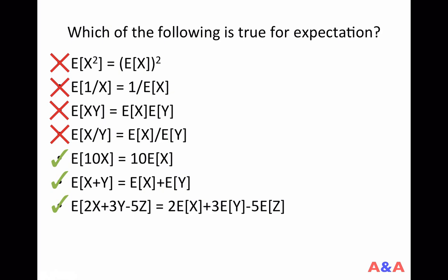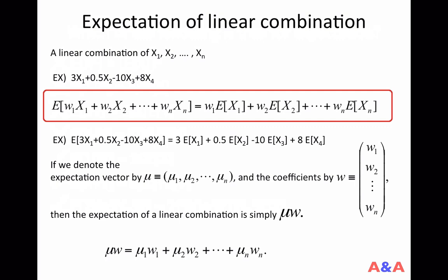This gives us a very useful formula: the expectation of a linear combination of random variables. A linear combination of variables X1, X2, X3, … Xn is simply the sum of these variables with constant coefficients in front of them. One example is 3·X1 + 0.5·X2 − 10·X3 + 8·X4. This is a linear combination — importantly, there is no square term, no product of two random variables, and no division.